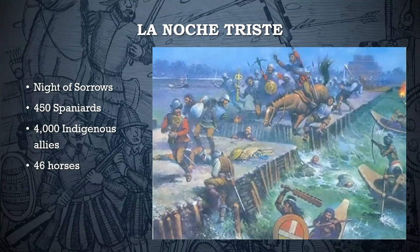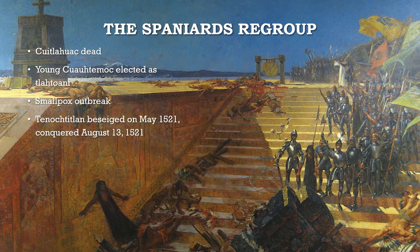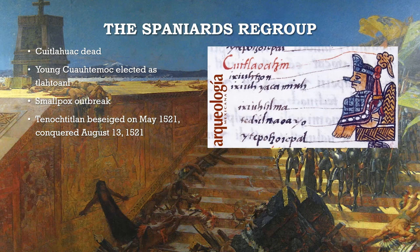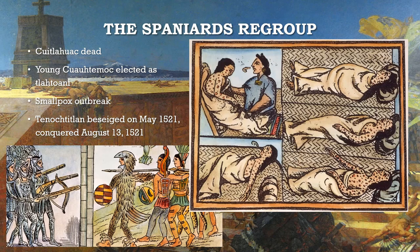The Spanish would later regroup and plan another assault on the Mexica capital. Several factors worked in their favor: Cuitláhuac, the heir to the Mexica throne, had died of smallpox, and elders elected Cuauhtémoc — the young nephew of Moctezuma — to rule in his place. Smallpox also ravaged the Mexica population, resulting in an outbreak and numerous deaths. In May of 1521, the Spanish and their native allies initiated the siege of Tenochtitlan, and by August 13, 1521, they succeeded in conquering the Mexica capital.